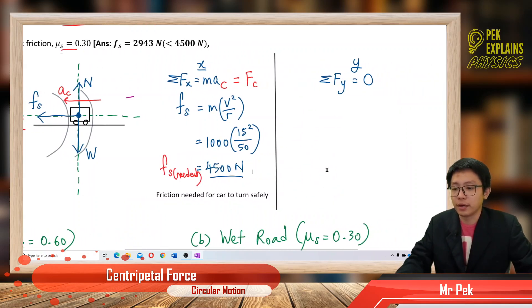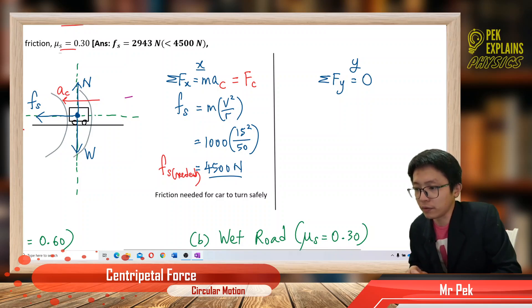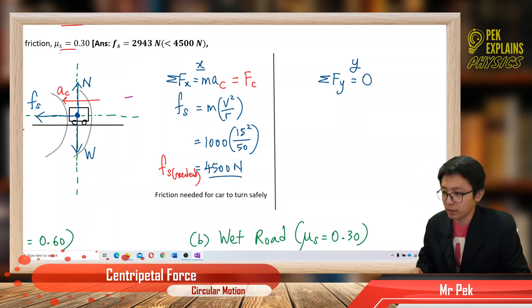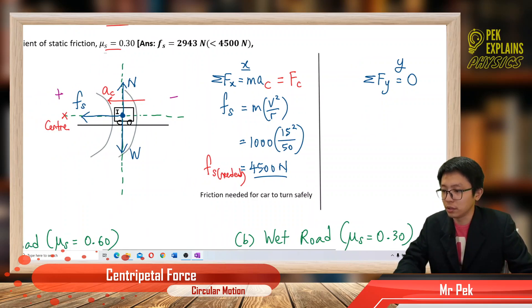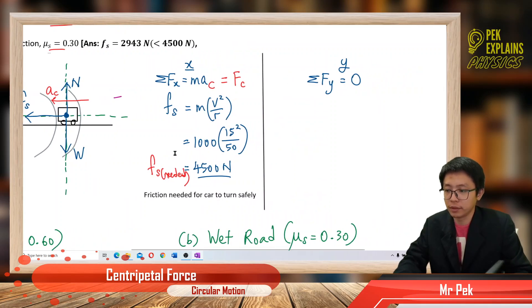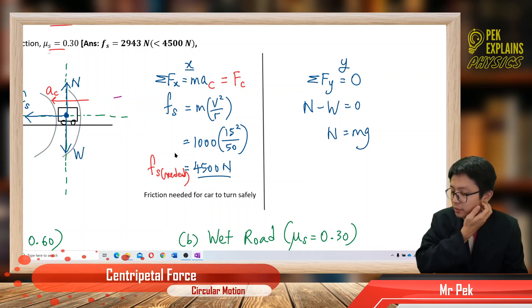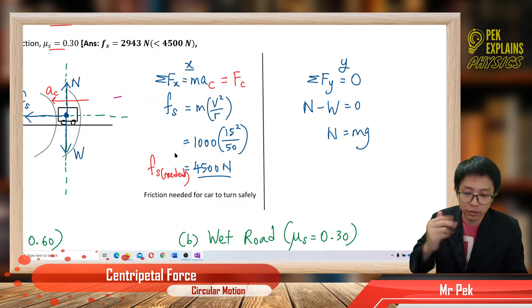Now let's do the y-component. We have the normal force going upward (positive) and the weight downward (negative). So N − W = 0, which gives N = mg. That's the normal force.